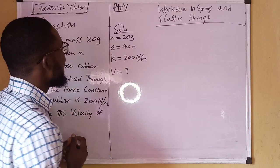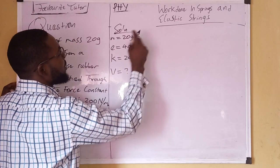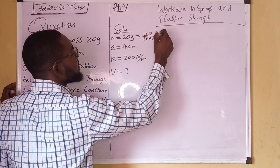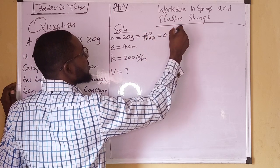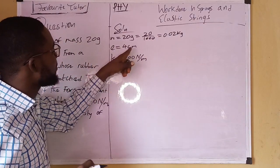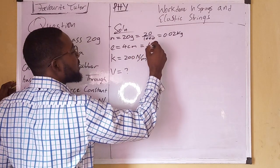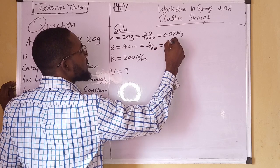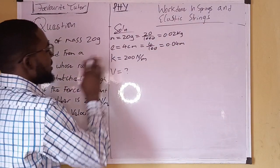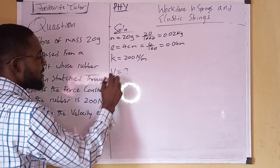Now we check that the parameters are in their respective units. The unit for mass should be kilograms, so we convert: 20 grams divided by 1000 gives us 0.02 kilograms. The extension should be in meters, so we convert: 4 centimeters divided by 100 gives us 0.04 meters. The force constant 200 newtons per meter is already in the correct units.